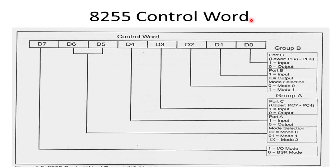The 8255 has a control word register. The control word is written into this register and it decides the mode of operation of 8255. In the control word, we place data from D0 to D7, and these bits decide in which mode 8255 will work. In my next video, I will explain the control word of 8255 and the modes of operation of 8255 in detail. So stay tuned.